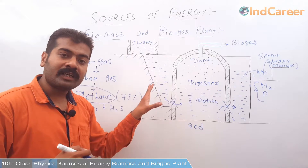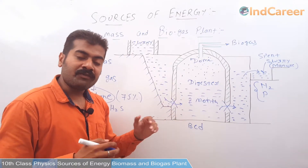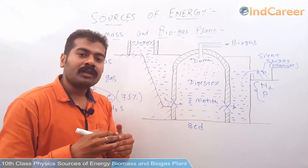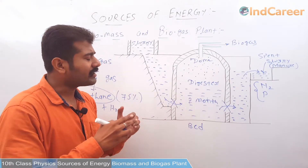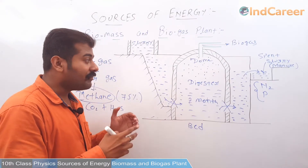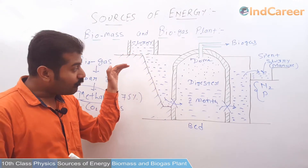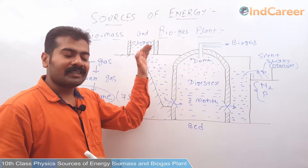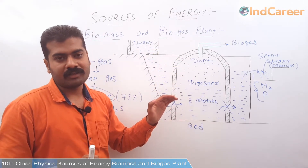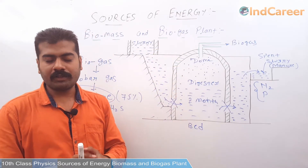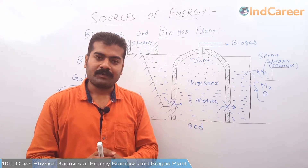We can say that biogas is a renewable source of energy. If we keep planting more trees and growing vegetables and fruits, we will get a continuous supply of biomass. There is no disadvantage to having a biogas plant — the waste material is utilized to produce fuel, and the output can be used as manure. So biogas is a renewable source of energy. In the next video, we will start wind energy. Thank you.